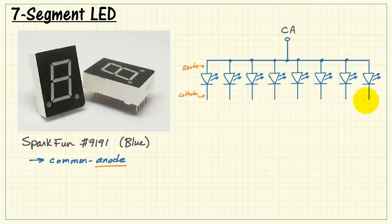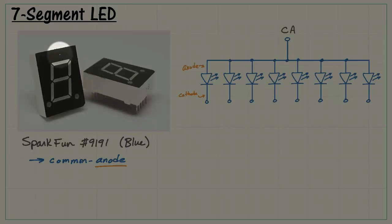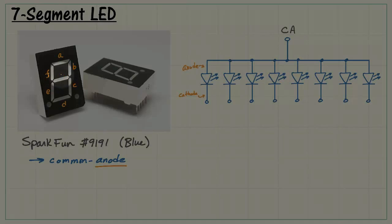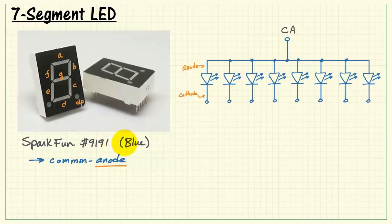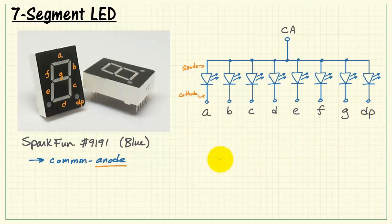The remaining cathodes for all 8 elements are brought out individually. The standard labeling scheme for 7-segment LEDs begins with segment A, B, C, D, and so forth, working your way around clockwise. We have G in the middle, and then the decimal point, D.P.